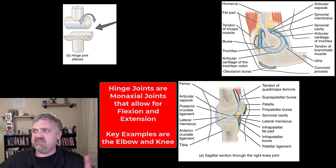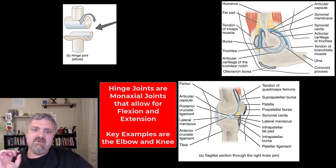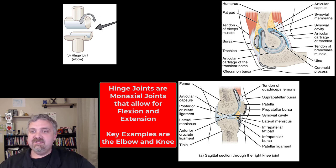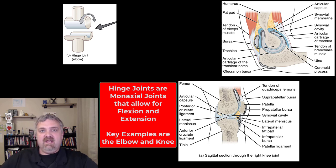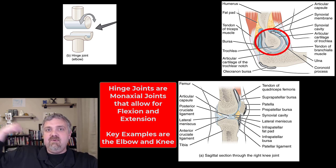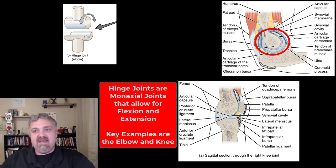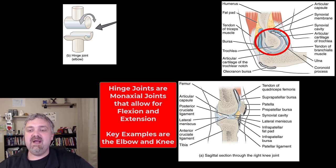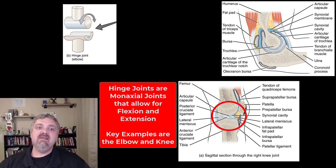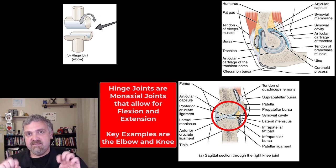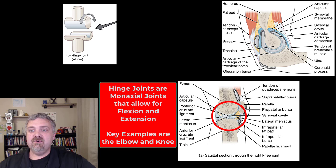Next we have the hinge joint, just like a hinge on your door. It is uniaxial or monaxial — freely movable but only in one plane. The elbow can flex and extend; it's freely movable but only in that one plane. Other examples include the knee with flexion and extension, the ankle with dorsiflexion and plantar flexion, and the interphalangeal joints, which are the finger and toe joints. Those are all examples of hinge joints.